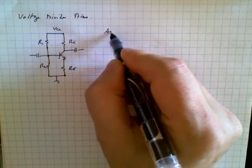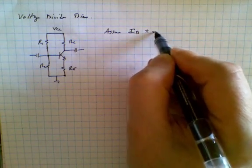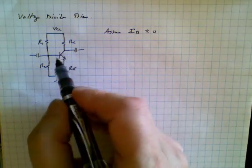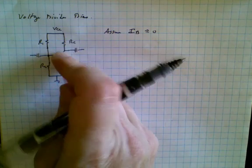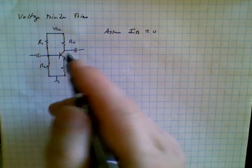So we're going to assume, first of all, that IB, the base current, is approximately zero. Now the reason why that's very nice is that that means we can essentially disconnect the transistor from the circuit and we can find the voltage at the base very easily.